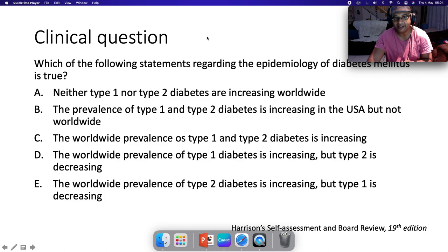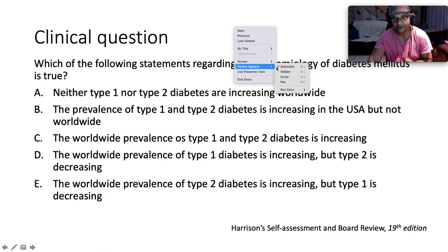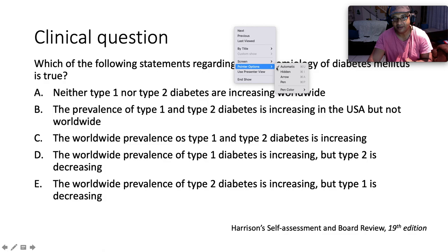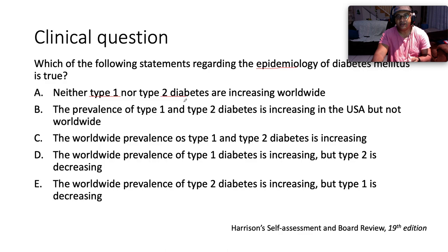Which of the following statements regarding the epidemiology of diabetes mellitus is true? Option A: neither type 1 nor type 2 diabetes are increasing worldwide. Option B: the prevalence is increasing in the US but not worldwide. Option C: the worldwide prevalence of both type 1 and type 2 is increasing. Option D: type 1 is increasing but type 2 is decreasing. Option E: type 2 is increasing but type 1 is decreasing.